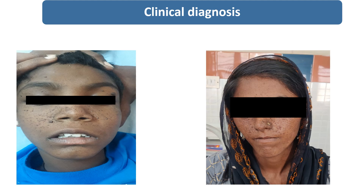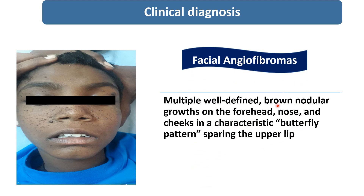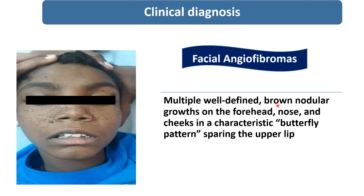So what will be the clinical diagnosis on the basis of these characteristic skin lesions? On the basis of this characteristic pattern of distribution and characteristic skin lesions, the diagnosis will be facial angiofibromas. In which condition will these characteristic lesions be present?